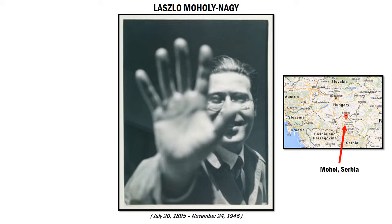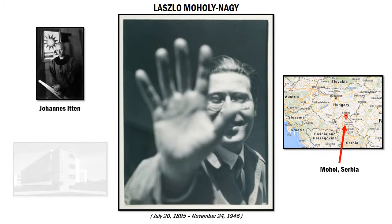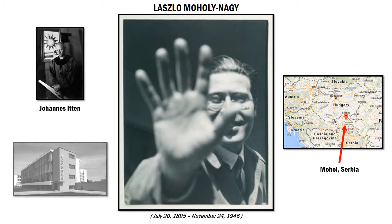Because he was already a member of Theo van Doesburg's camp, he was able to be appointed to take over the famous artist Itten's role at the Bauhaus. Here is where he began to thrive as an artist until eventually passing in the year 1946 in Chicago.